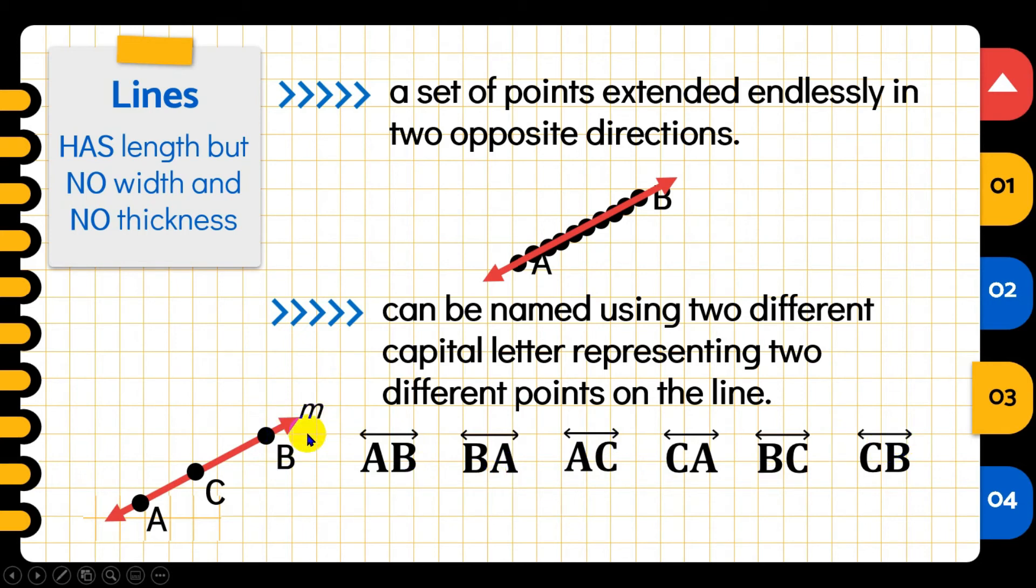These all refer to just one thing. But since we have three distinct points on this line, we have different possible names for our line. Again, don't forget the symbol of the line. Another way is when we have a cursive or smaller letter beside our line, we can say that is line M. This happens when there is a small cursive letter beside our line. But if there isn't one and we have at least two points, we can still name the line. Again, remember, the sign for a line is it extends endlessly into opposite directions. So it should have an arrowhead. So when we name it, the symbol above the two capital letters should also have an arrowhead.